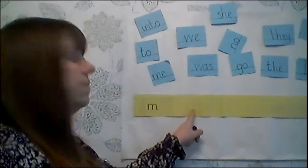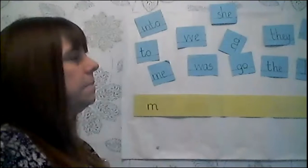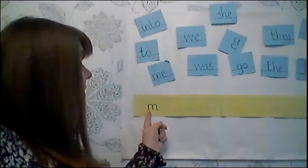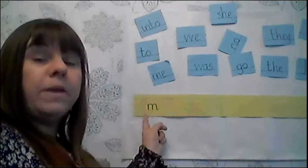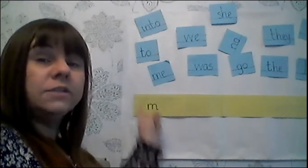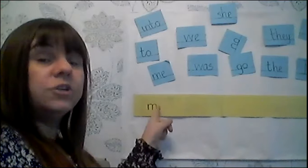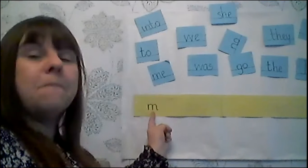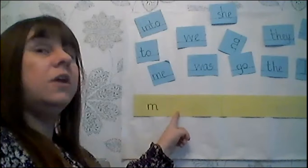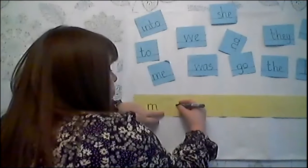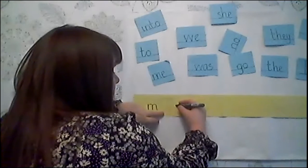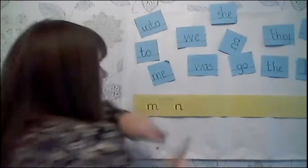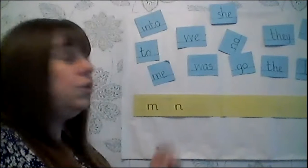So now we're going to move on to the M. It's very similar to the N — it's got a straight back, it's a small letter, and it's got an arch. It only has one arch and the N has two. So M: straight back, down, back up, arch, down and flick for your M.